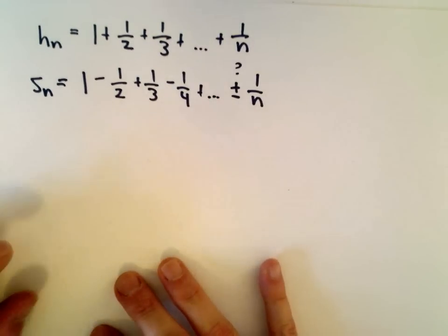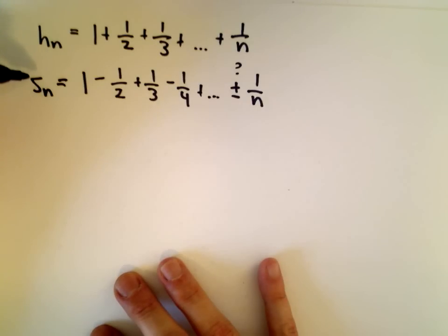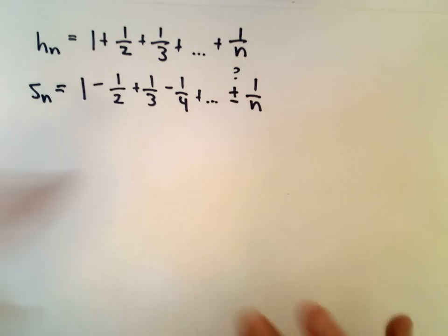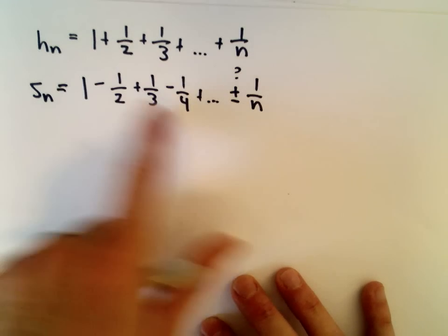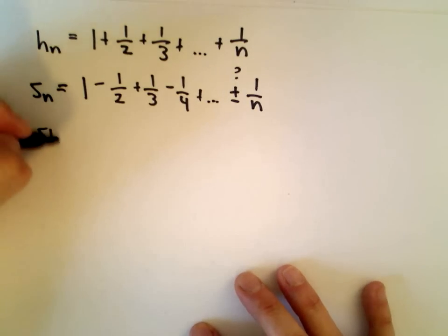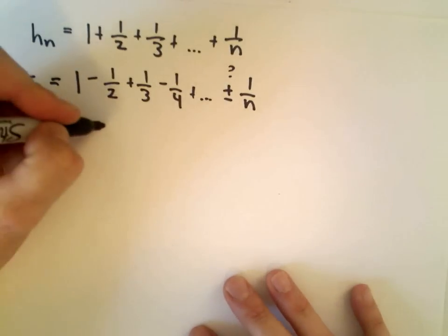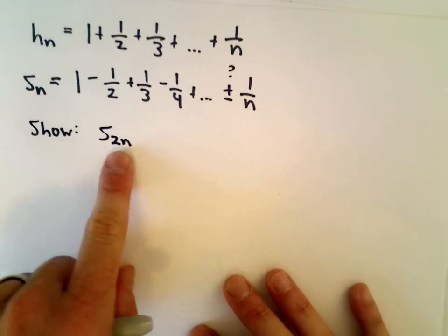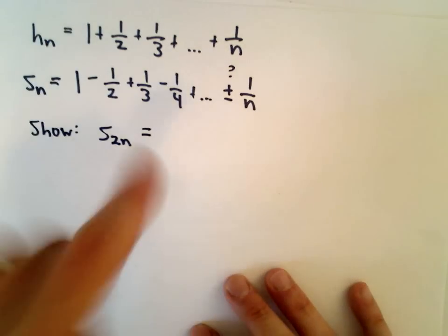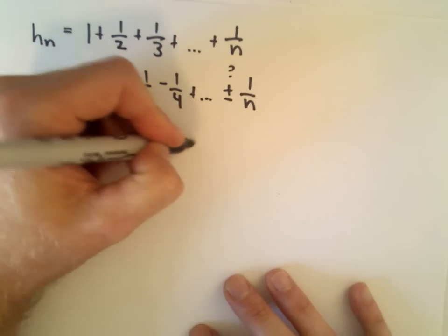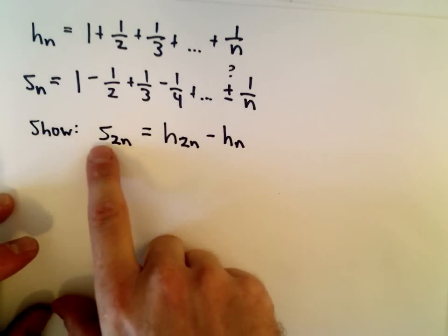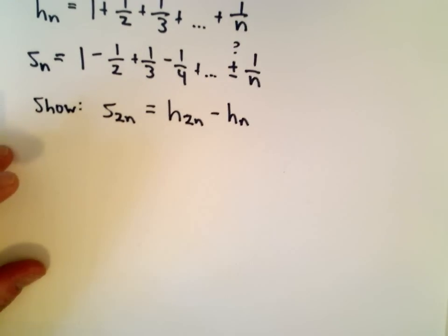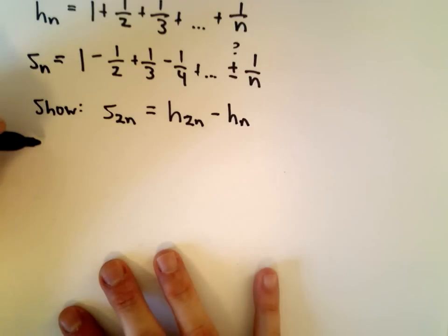We're going to relate the harmonic series to the alternating harmonic series by making an observation. It's not completely shocking that you should be able to relate these two together — the terms are almost the same except some are positive and some are negative. We're going to show that s sub 2n, the first 2n terms of the alternating harmonic series, can be written as h of 2n minus h of n. Let me do a quick example to convince you this is correct.